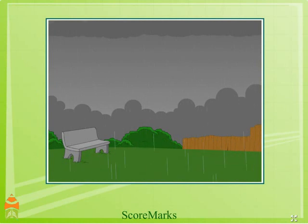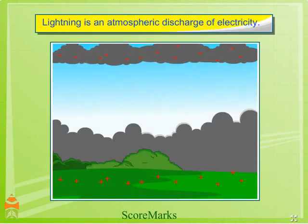Lightning is an atmospheric discharge of electricity. During this discharge, there is a charge separation large enough within the clouds. Thunder clouds generally develop a high negative charge at their base. The ground is positive with relation to the cloud. When this large potential difference is discharged, the result is lightning.